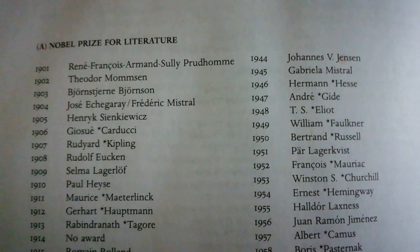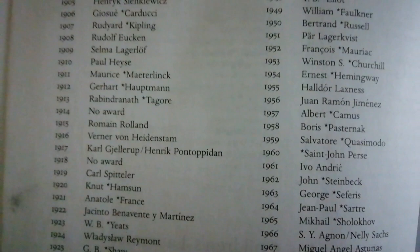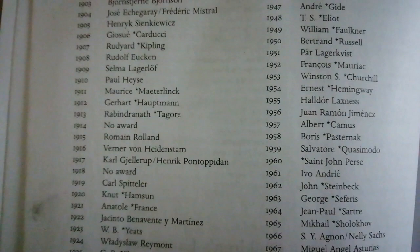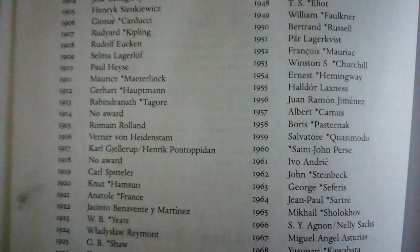The Nobel Prize in Literature started in 1901. One of the very famous I would like to start with is 1907 Kipling — quite famous for his Jungle Book. He is very well regarded and also considered a children's writer.